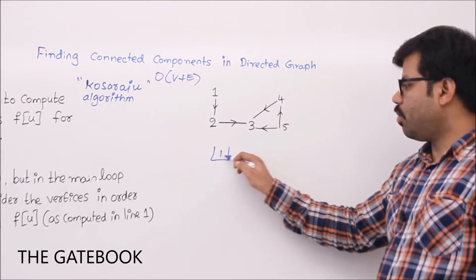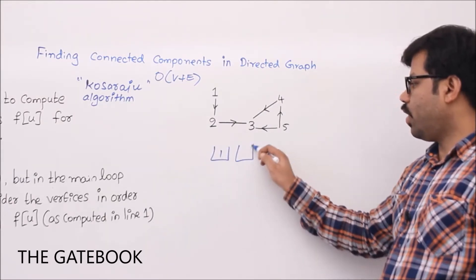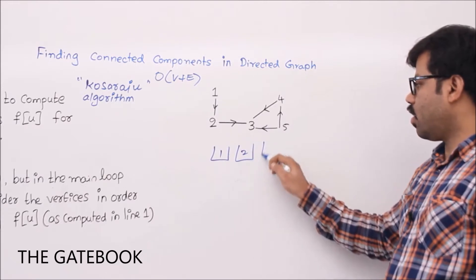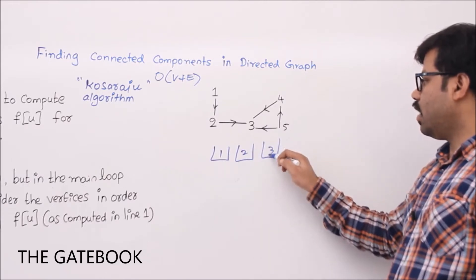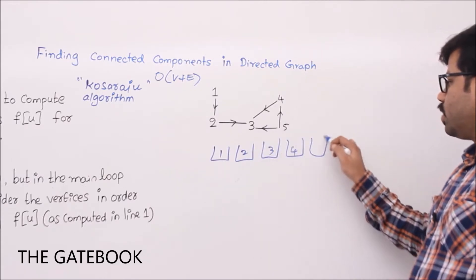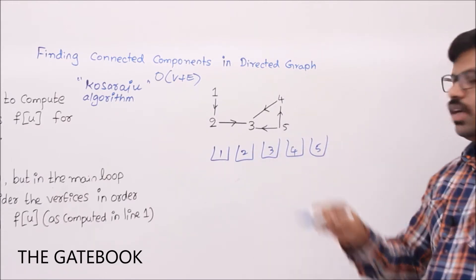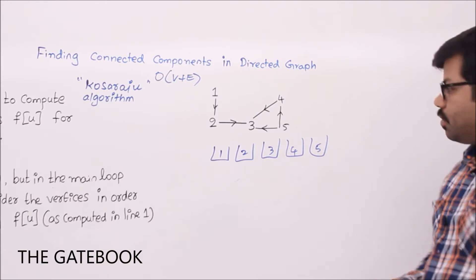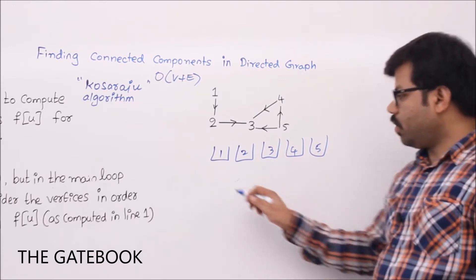So 1 is a separate connected component, 2 is a connected component, and 3, 4, 5 are all individual connected components. Let's take one more example.